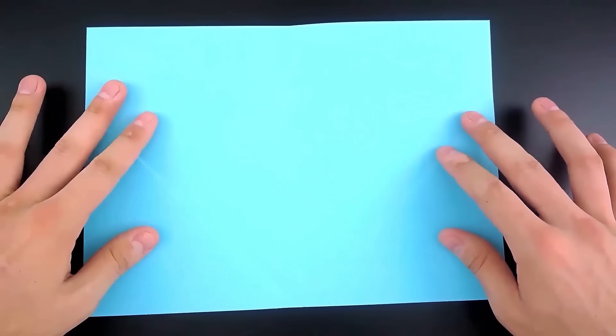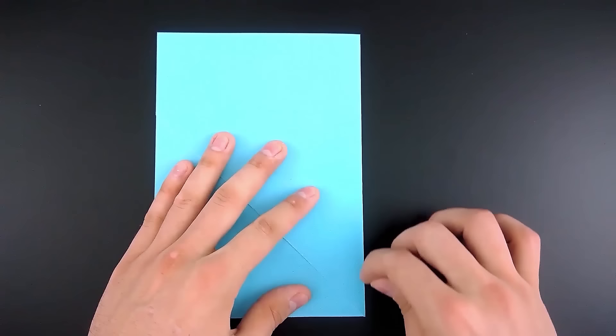First of all we need to fold in half, so just bring one side to the other and make a crease.